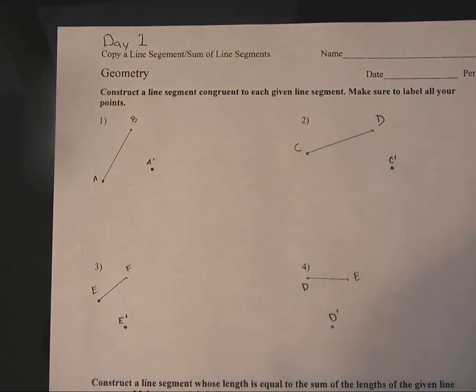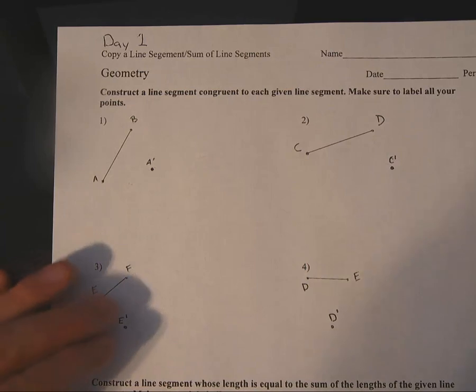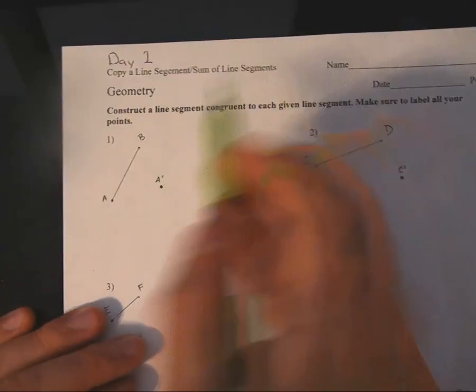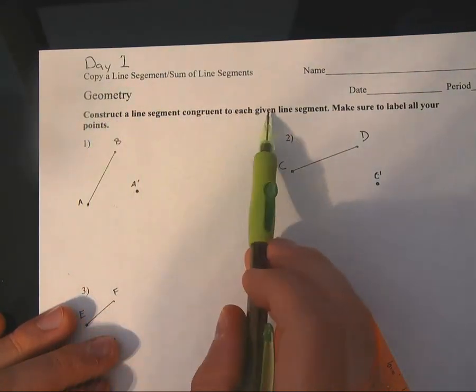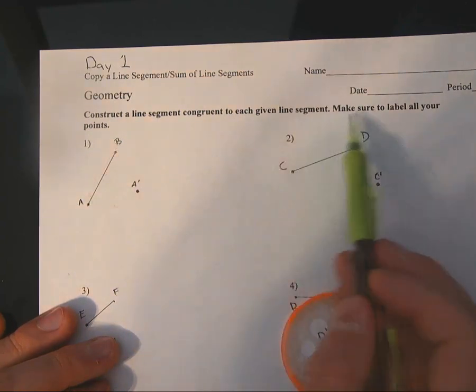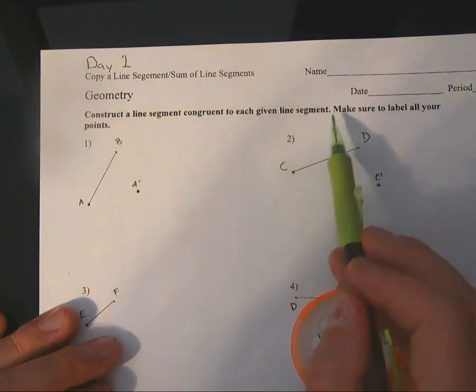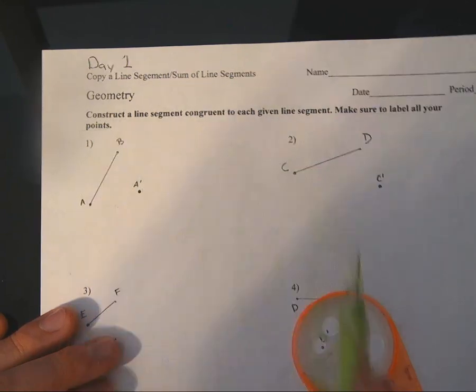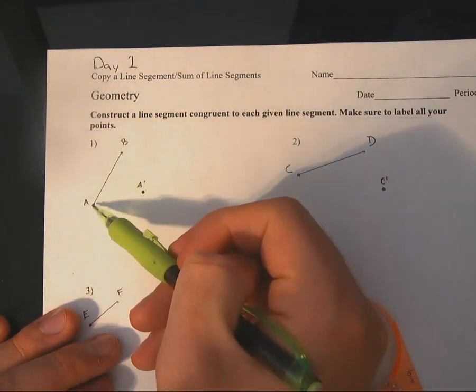I'll go pretty quick, so pause the video if you need to. All right, so the instructions say to construct a line segment congruent to each given segment. Make sure to label all your points—and that's important. The line segment given at number one is the line segment AB, and I want to copy it over to A prime.